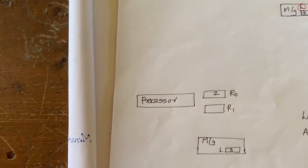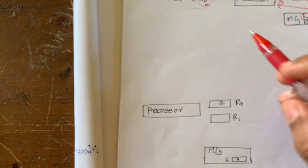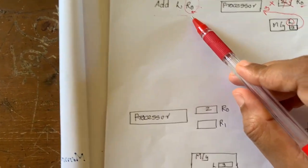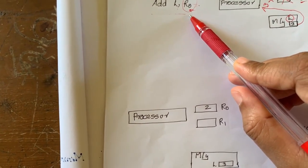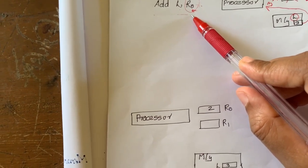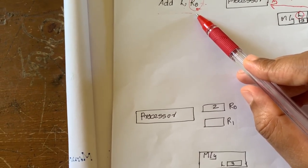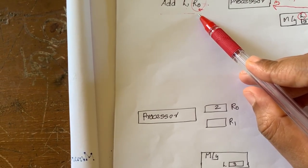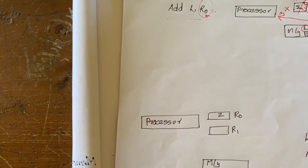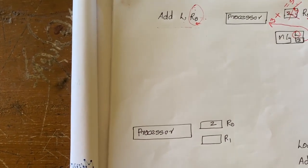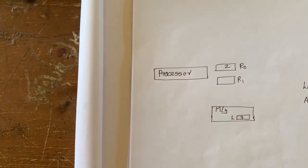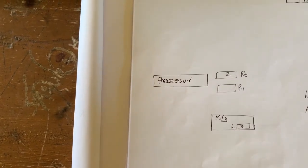Where does it place the result after addition? This indicates that after addition, the resultant value should be placed in register R0. So the initial value 2 in R0 is replaced with the resultant value 5.